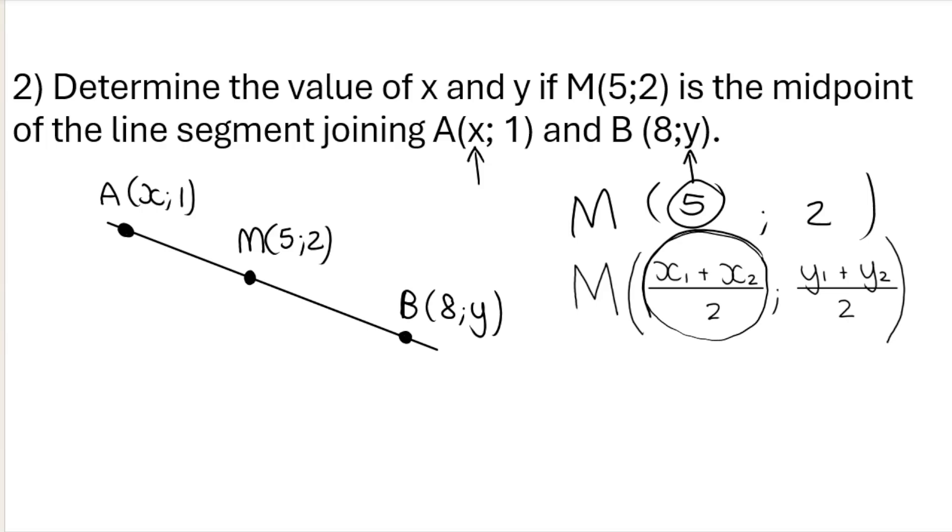So 5 corresponds to this fraction. In other words, this fraction over here, x1 plus x2 divided by 2, the answer for that part of the midpoint coordinate is 5. They've given me the answer. Now we need to work backwards, sub in x1 and x2. So let's call A coordinate number 1 and B coordinate number 2. So x1 would then be, this is the x value, this is the y value, so x1 would be x plus x2. Go to the second coordinate, this is x, this is y, x2 would be 8. We divide that by 2 and that gives me 5.